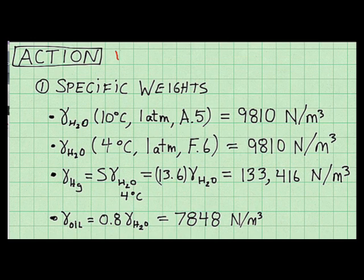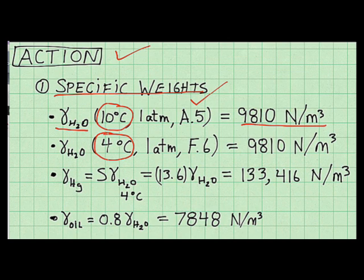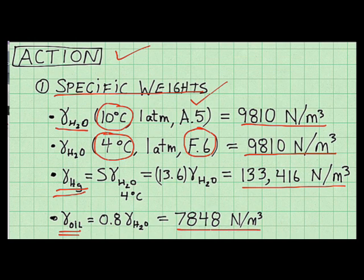To execute my plan, I found values of specific weight. I looked up the specific weight of water at 10 degrees C and found it had this value. I looked this up in table 8.5 in the back of the book. To calculate specific weights of the other fluids, I need to find the specific weight of water at 4 degrees C because this is in the definition of specific gravity. So I looked this up too and found it had the same numerical value, and I looked this up in table F.6. So the specific weight of mercury came out to be that value, and the specific weight of oil, right here.